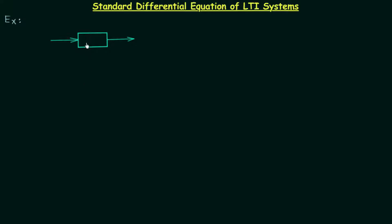In this example, this black box is representing one LTI system. The input to this LTI system is x(t) and the output is y(t). This LTI system has one differential equation with two different parts. The first part contains the output y(t) and its derivatives, written on the left hand side. The first term is seven times the third derivative of output y(t) with respect to time t.